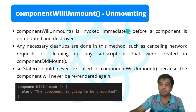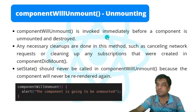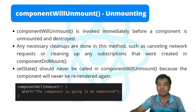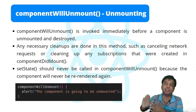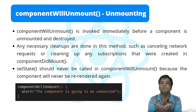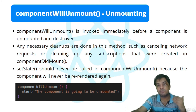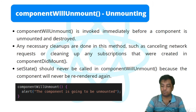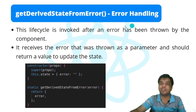The last method in the unmounting phase is componentWillUnmount. It is invoked immediately before a component is unmounted or destroyed. Any necessary cleanups are done here, such as canceling network requests or cleaning up subscriptions created in componentDidMount. setState should never be called inside componentWillUnmount because the component will never be re-rendered again. This is the very last method, so updating state here would have no effect.